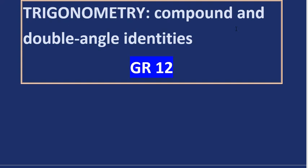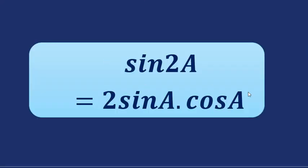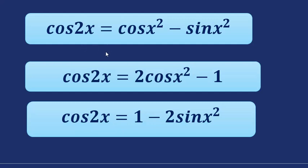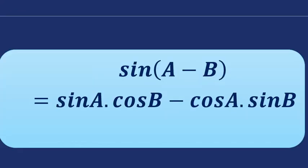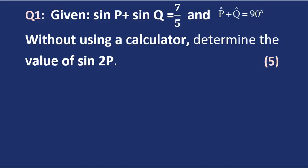Welcome to trigonometry: compound and double angle identities. Before we start, let's go through all the formulas you need to know for double and compound angles. We have the double angle formula for sine, three double angle formulas for cosine — choose whichever makes simplifying easier — the cosine compound angle expansion formula, and the sine compound angle formula. We don't need to memorize these since they're given in the formula sheet.